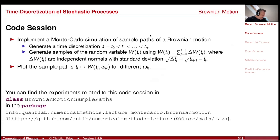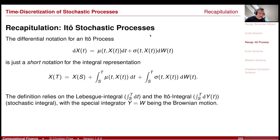Code session: simulate sample paths of the Brownian motion. You can try it out and modify the parameters. Next, I would like to recapitulate the Ito stochastic process, because I want to build more complicated stochastic processes out of the Brownian motion.